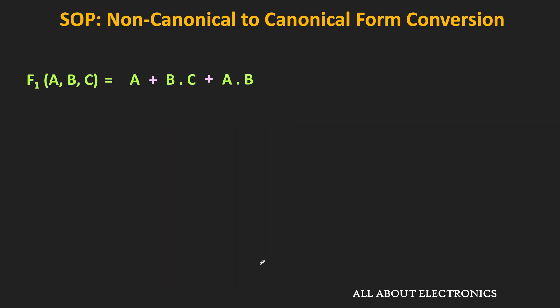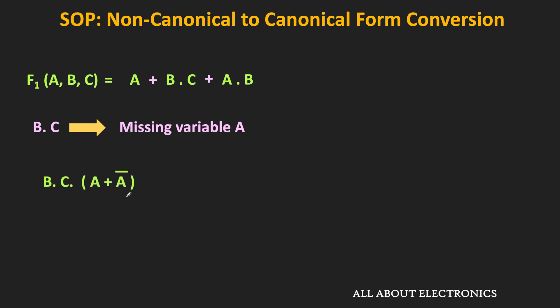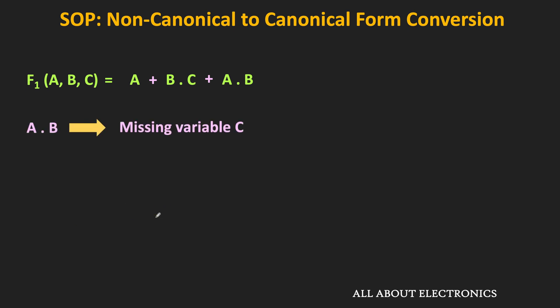In the second term, variable A is missing, so after including it we get A·B̄·C + Ā·B̄·C. Similarly, in the third term variable C is missing, so after including the missing variable we write it as A·B·(C + C̄), which simplifies to A·B·C + A·B·C̄.